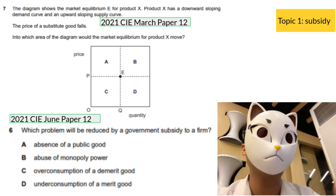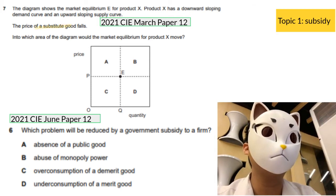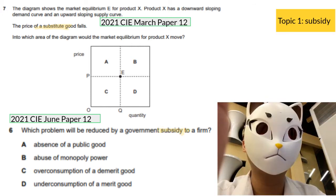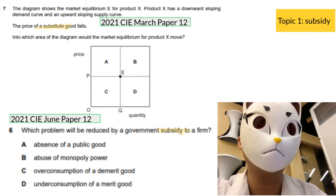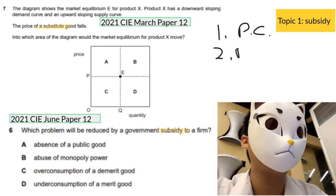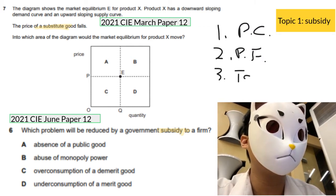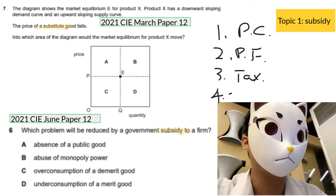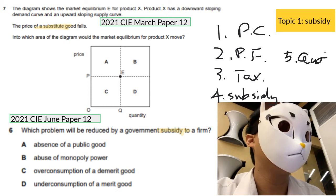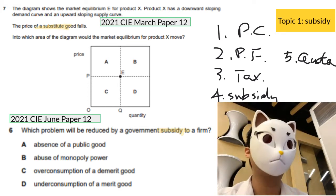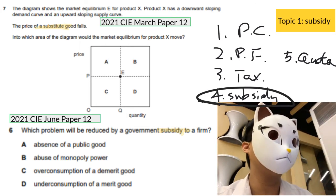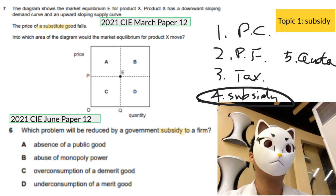The first topic I would like to talk about is subsidies. There are five kinds of government intervention in your textbook: price ceiling, price floor, taxation, subsidy, and quota. In recent exam trends, subsidy is a very hot topic, so make sure you study it first.